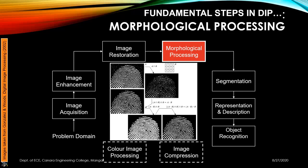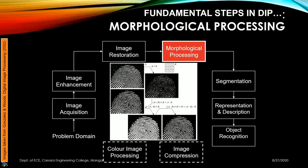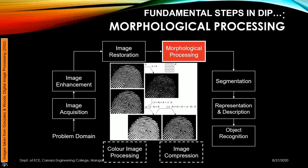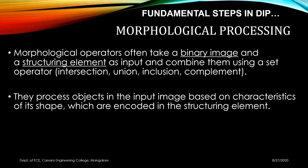The next block is morphological processing. Here we try to recover missing shapes or objects, or join missing parts using morphological operators and mathematical equations. In the fingerprint example, some lines are missing and we use morphological processes to join them. We use set operators like intersection, union, inclusion, and complement. The input is a binary image and a structuring element; they are combined using set operators to process objects based on shape characteristics encoded in the structuring element. This is discussed in detail in module four.